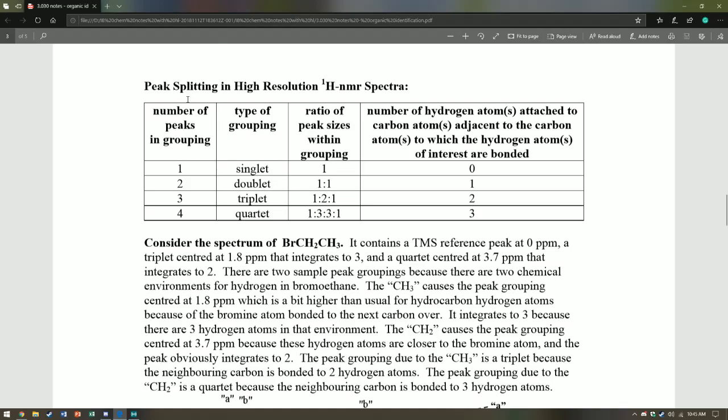Here's a chart relating the number of peak groupings to adjacent carbons. If we have a singlet, there would be one peak and zero neighboring hydrogen environments. If we have a doublet, there's one neighboring hydrogen environment. If we have a triplet, there's two neighboring hydrogen environments. And if we have four peak groupings, we have three neighboring hydrogen environments. Notice how these ratio of the peak sizes and the grouping follow Pascal's triangle. We call these singlets, doublets, triplets, and quartets.